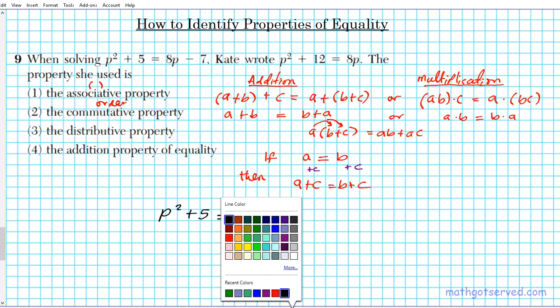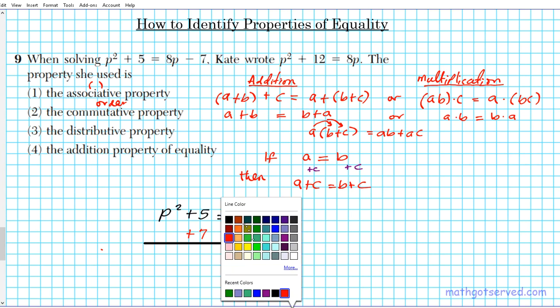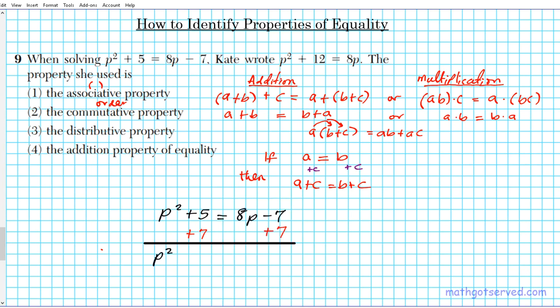To get rid of negative 7, we use the inverse operation. What is the inverse of minus 7? The inverse of minus 7 is 7. So what we're going to do is we're going to add 7 to both sides of the equation. Do you see what the answer is based on what we just did? What we did is we added a constant to both sides of the equation, and the resulting answer is going to be p squared plus 12 equals 8p, which is this right here, this equation.